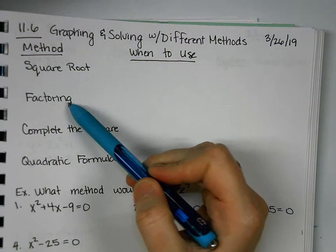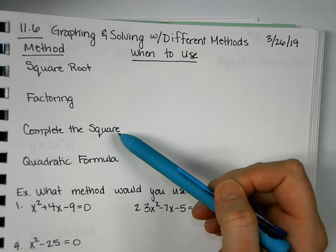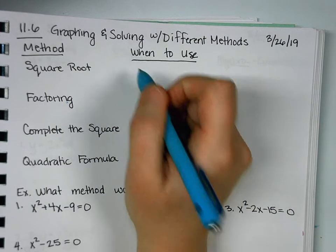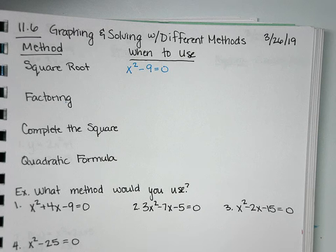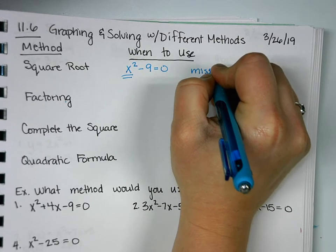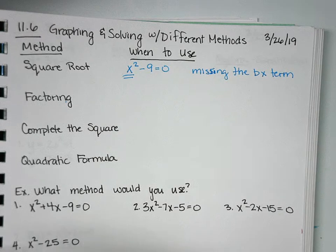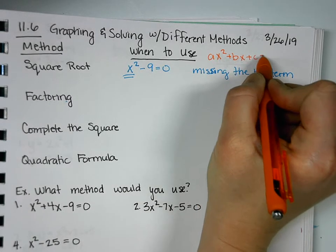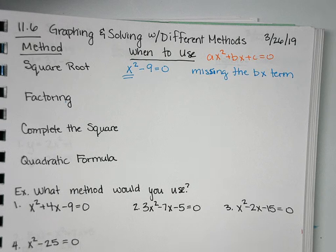For our last unit, square roots and factoring we did in unit 10, and then completing the square and quadratic formula are what we've done here. They all give us the same exact information. So for solving by square roots, when to use it is when you have an equation that looks something like this, where all you have is an x squared, you're missing the bx term.